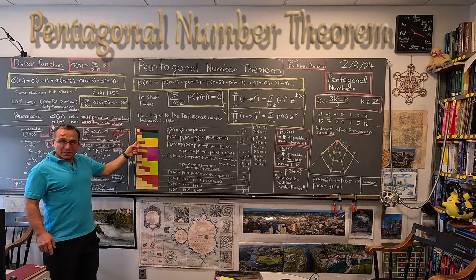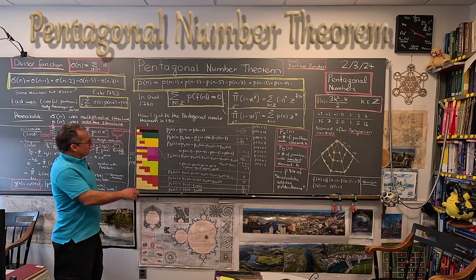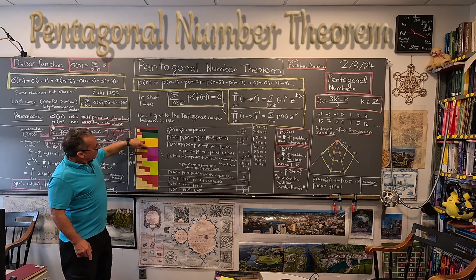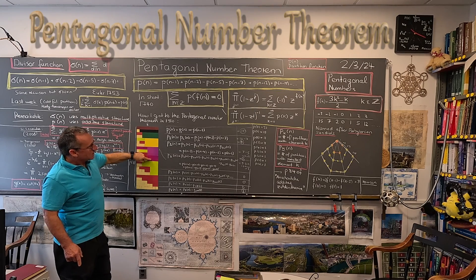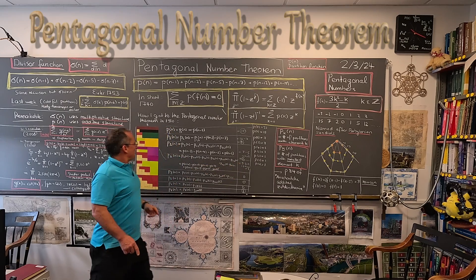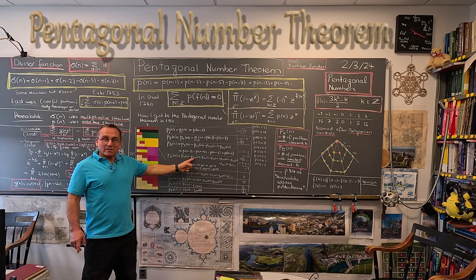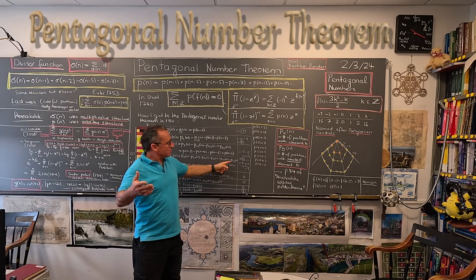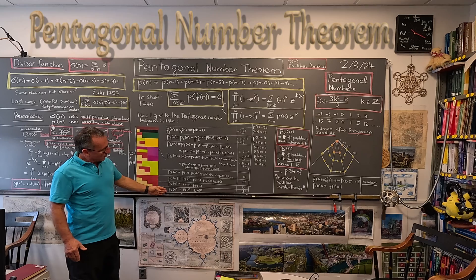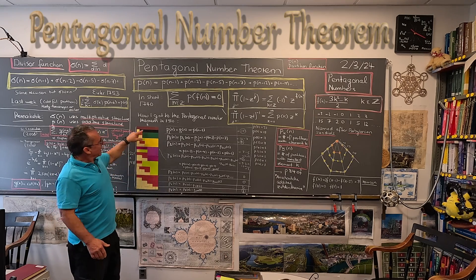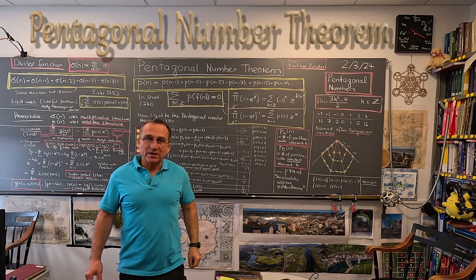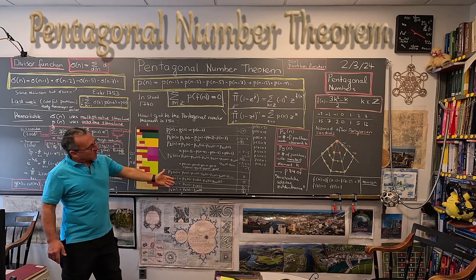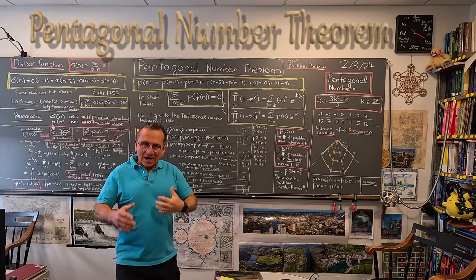Similarly for 4 as the smallest: five partitions contain 4, and after inclusion-exclusion — subtracting where 1, 2, or 3 appears before 4, adding back double-counted combinations — we get just 1. Likewise for 8 being the first element. When I add all of this up, I notice I get the pentagonal numbers. That's what I wanted to say today.